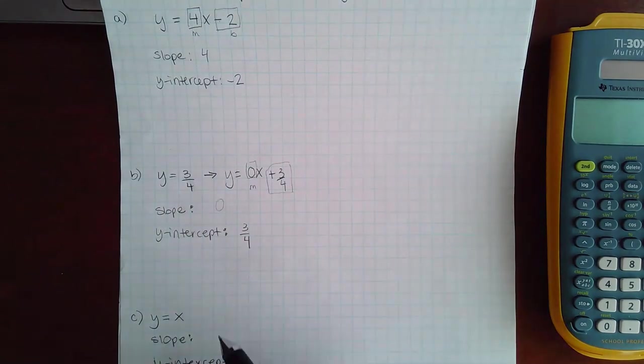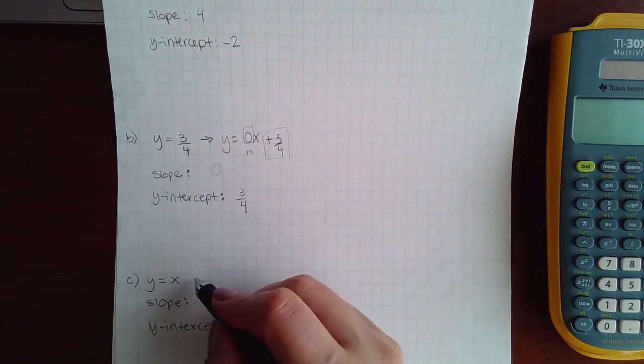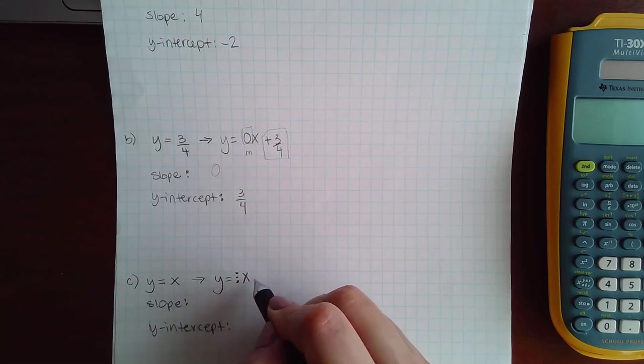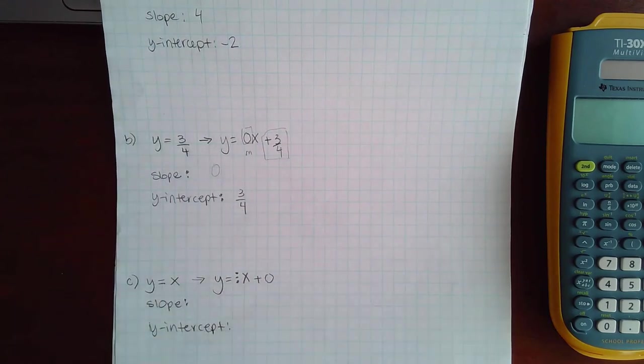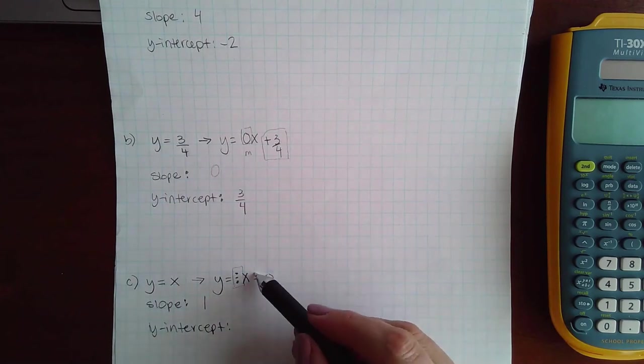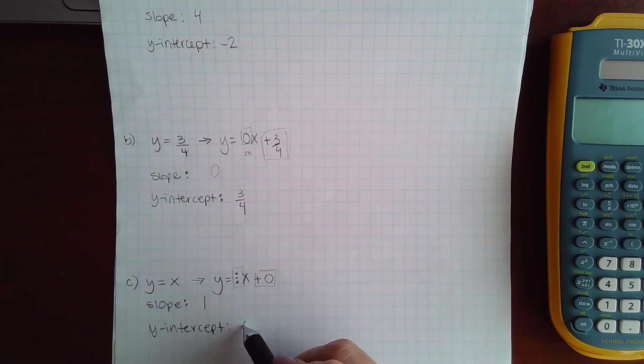Here you can rewrite this one as y equals that imaginary one x plus zero, and then it becomes a little bit more apparent that the slope is that little imaginary one, and the b is the y-intercept, which is zero.